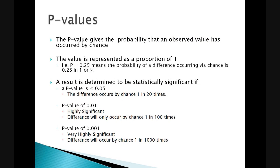P-values give the probability that an observed value could occur by chance. The value is typically represented as a proportion of 1. Therefore, a p-value of 0.25 means the probability of the difference occurring via chance is 0.25 to 1 or 1 in 4.